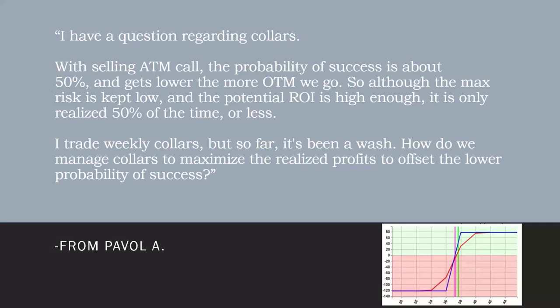Pavel's direct question is, I have a question regarding collars. With selling an at-the-money call, usually sell an at-the-money call, buy a lower strike put for the collar. When selling the at-the-money call, the probability of success of the stock going up above the short call strike price and being assigned for the max profit on the position is only about 50%. It gets lower the more out of the money we go.